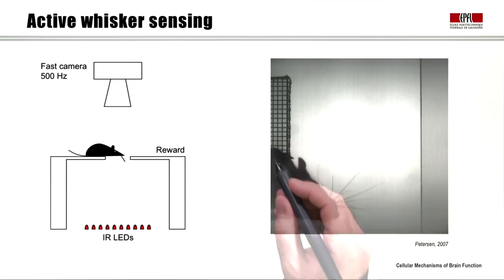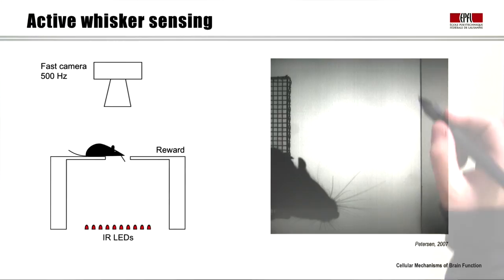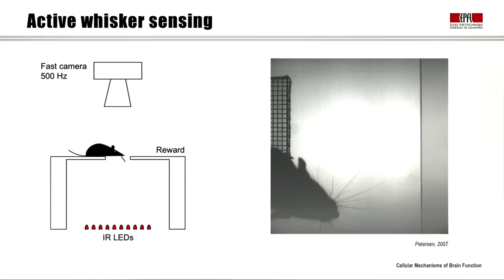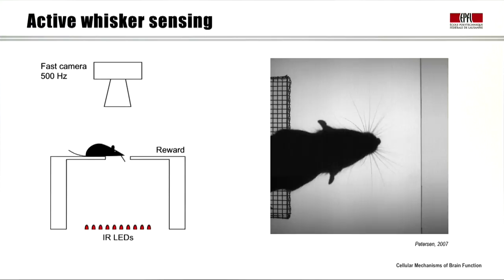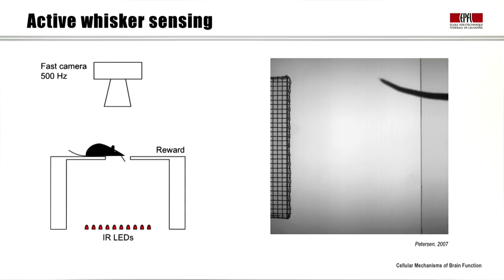We film from above and see the silhouette of the mouse with its whiskers. It stands on one platform and reaches across space to touch a target platform where it needs to jump to obtain its reward. Here you see the mouse touching the target platform, and when it's built up sufficient confidence, it jumps and enjoys its snack.